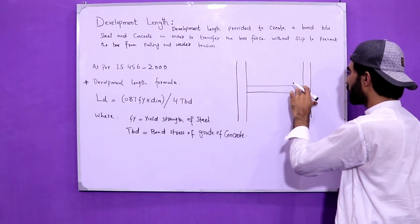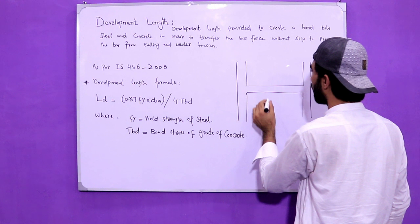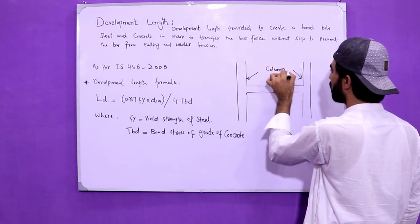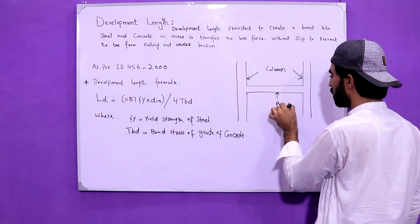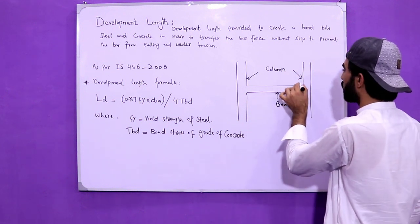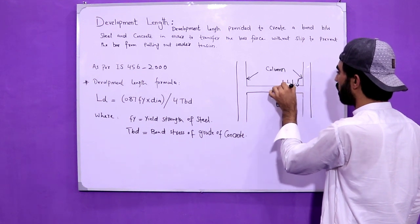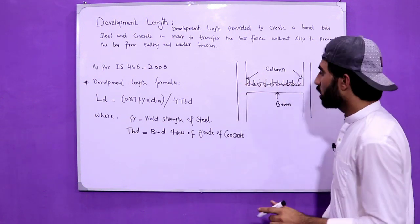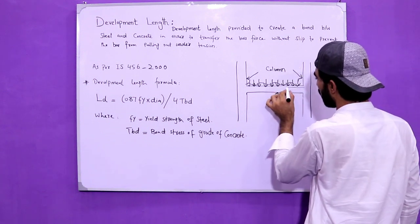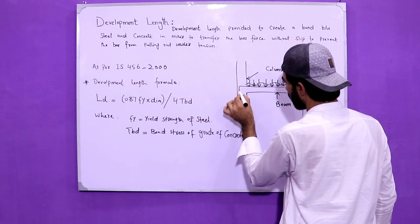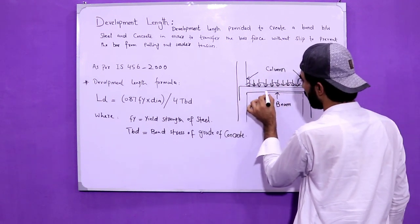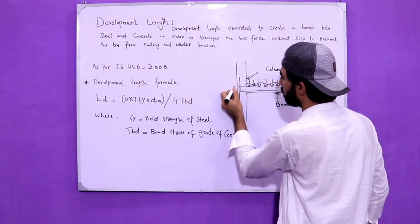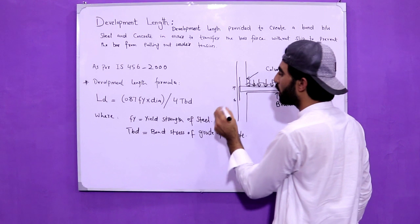As you can see, this is the diagram in which I will show you development length. These are columns, and as you know this is a beam. Here you can also see these are loads on the beam — UDL, etc. This is the top bar of the beam, and this is the bottom bar. The top beam goes like this, and this length is called development length — Ld.